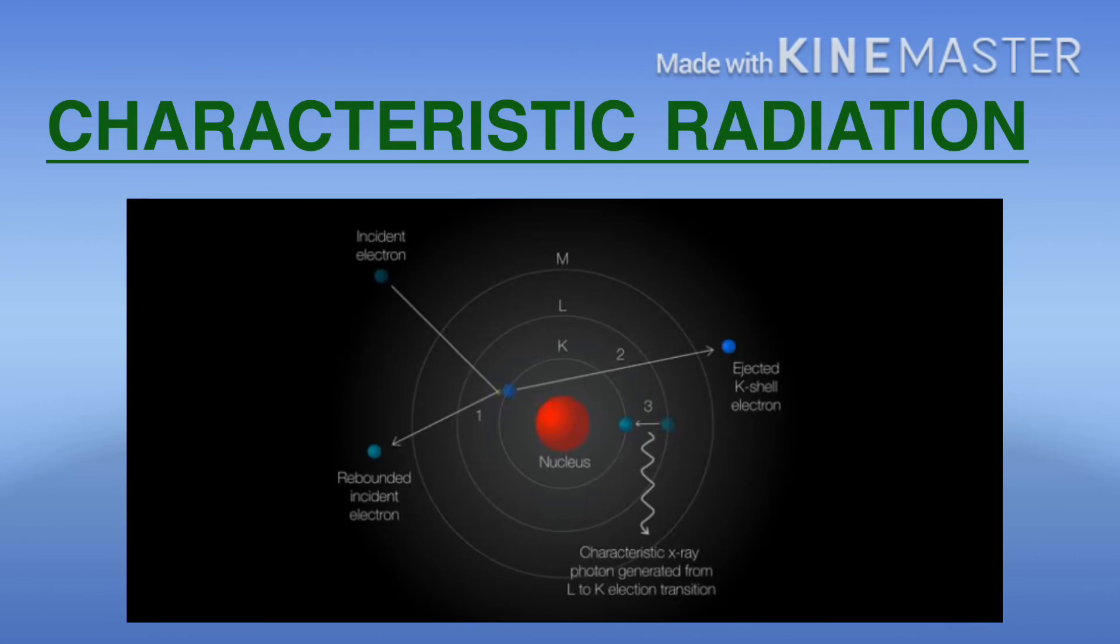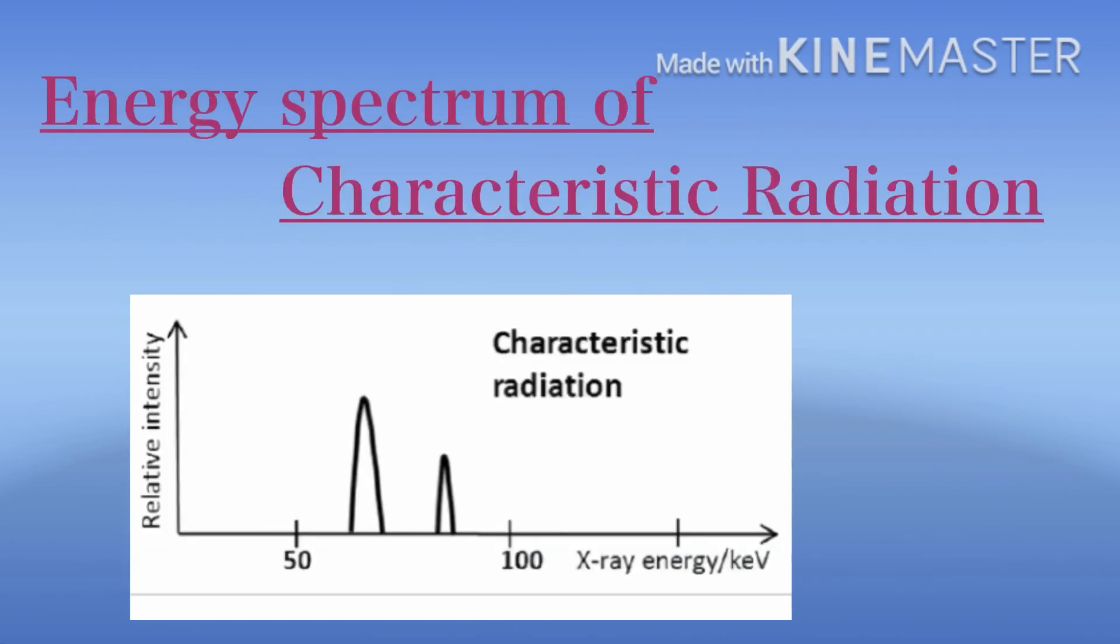This characteristic radiation energy is equivalent to the energy level difference between the outer and inner shell electrons involved in the transition. Then our next topic is energy spectrum of characteristic radiation.